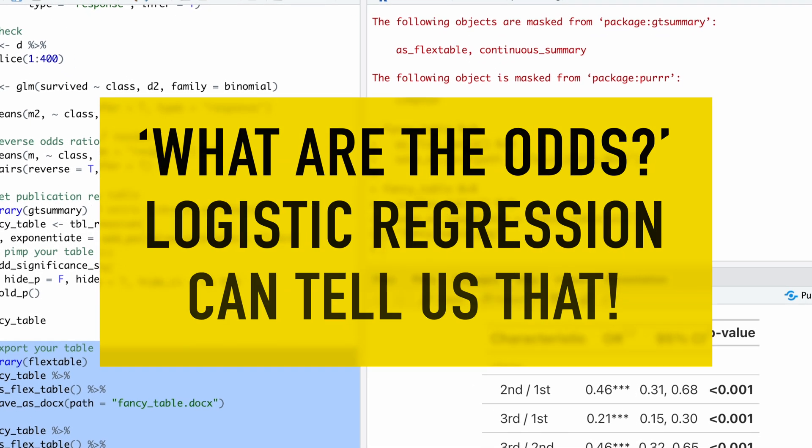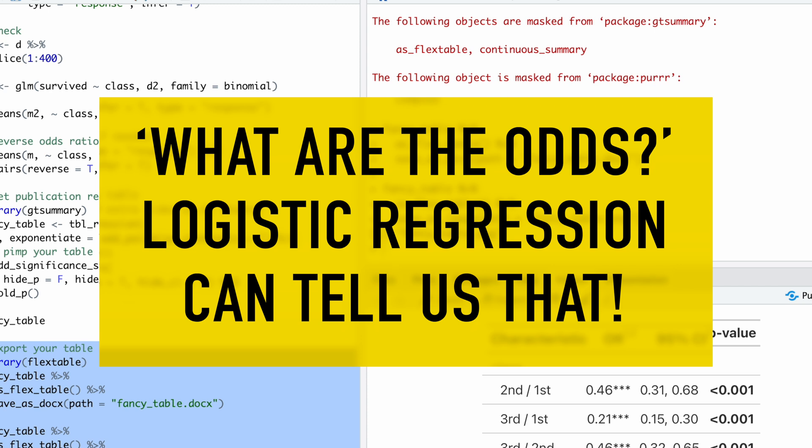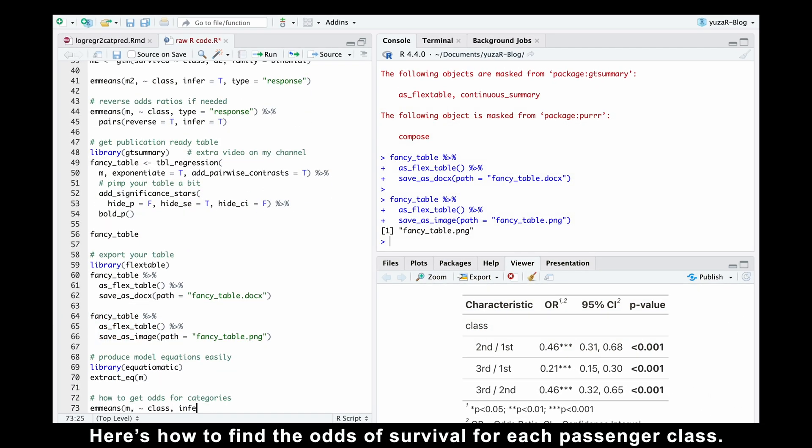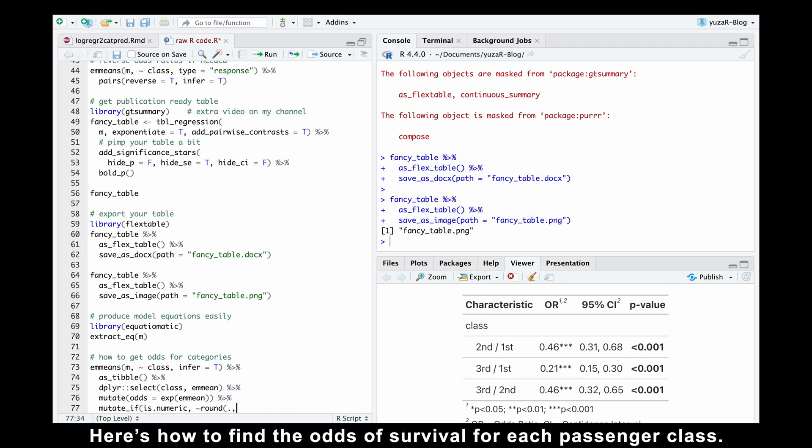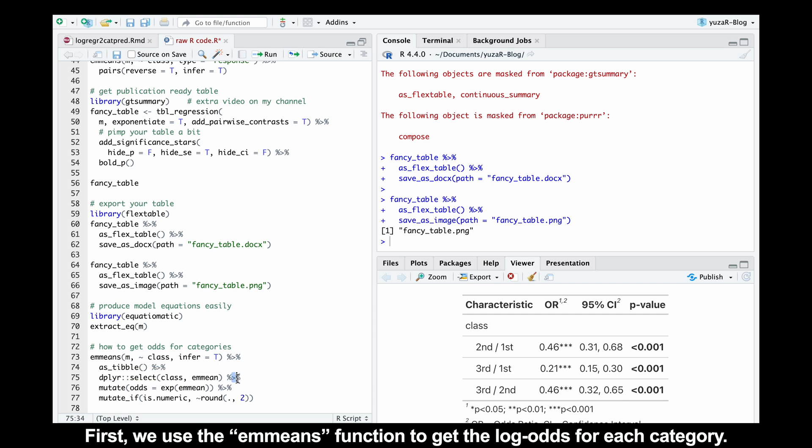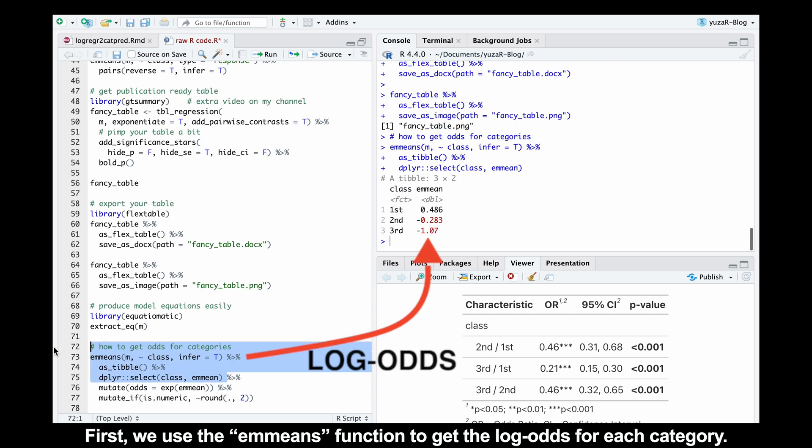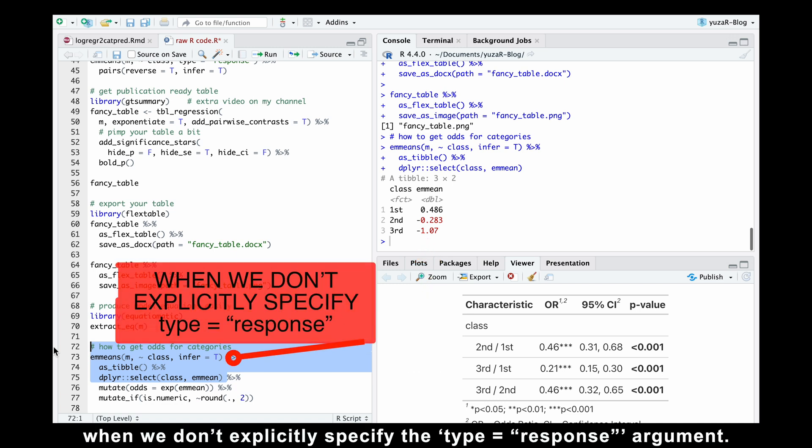Last but not least, let's address the classic question: what are the odds? Believe it or not, logistic regression can actually tell us that. Here's how to find the odds of survival for each passenger class. First, we use the emmeans function to get the log odds for each category. By default, emmeans displays log odds when we don't explicitly specify the type equals response argument. Next, we simply exponentiate the log odds to convert them into actual odds.